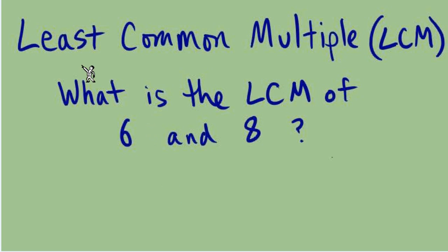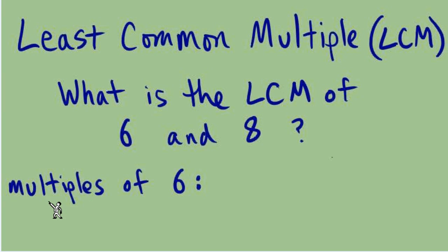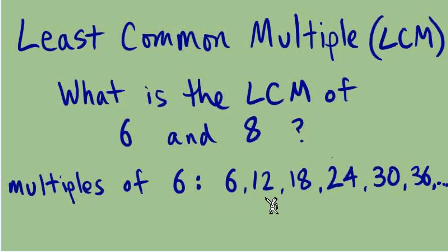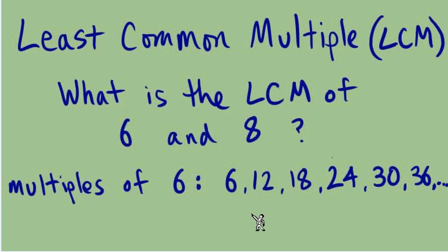Let's break down what 'least common multiple' means. We'll take 6 and 8 and write out some multiples. Starting with multiples of 6: you could find them by doing 6 times 1, 6 times 2, 6 times 3, 6 times 4, and so on. Or you could count by 6s, starting with 6 and adding 6 over and over again. So there are a couple of ways we can find multiples.